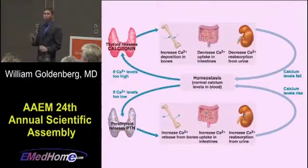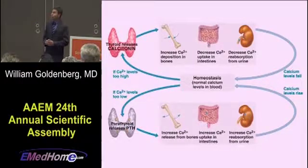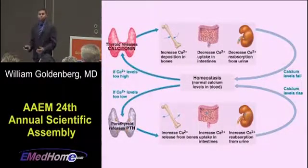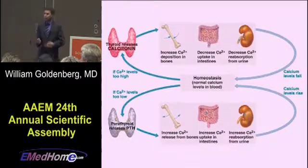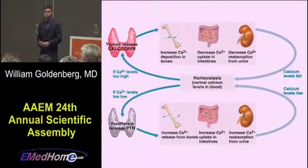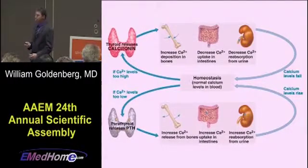You don't need to know this slide, but this is an overview of calcium metabolism in your body. On the top you have calcitonin, which decreases your calcium level, secreted by the thyroid. And on the bottom you have parathyroid hormone, secreted by the parathyroid gland, which increases your serum calcium levels via vitamin D mainly.